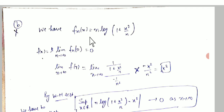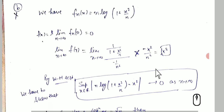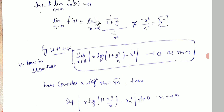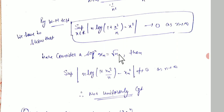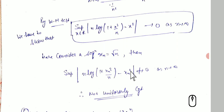For the second sequence f_n(x) = n·log(1 + x²/n): the pointwise limit is x². To test uniform convergence via the Weierstrass M-test, we check whether the supremum goes to 0. Taking x_n = √n, we get n·log(1 + n/n) = n·log 2, which does not tend to 0 as n → ∞. So this sequence is not uniformly convergent.